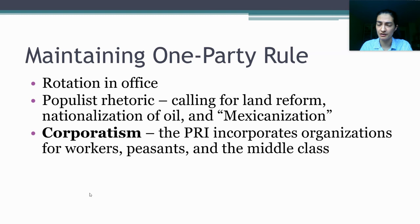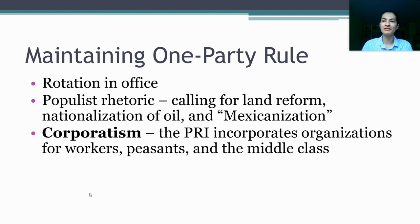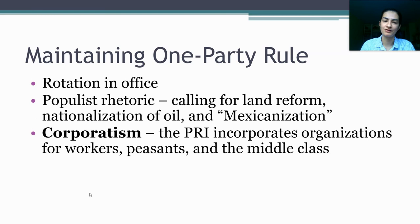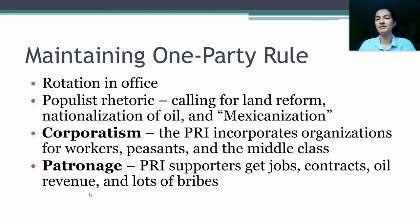A third PRI strategy is corporatism: the PRI creates bodies within its own party structure that approximate what civil society organizations might do in a fully democratic society. Instead of joining an independent labor union, for instance, teachers in Mexico join a PRI-sponsored labor union. That serves as a mechanism for teachers to communicate what they want to the ruling party, but also for the ruling party to communicate back and use those members to support PRI rule. The PRI creates major organizations for workers, peasants, and the middle class — and at one point a separate sector for the army, later merged into its three main sectors. This is an important way for the PRI to get ordinary people involved in the party rather than letting them form independent organizations that might threaten PRI power.